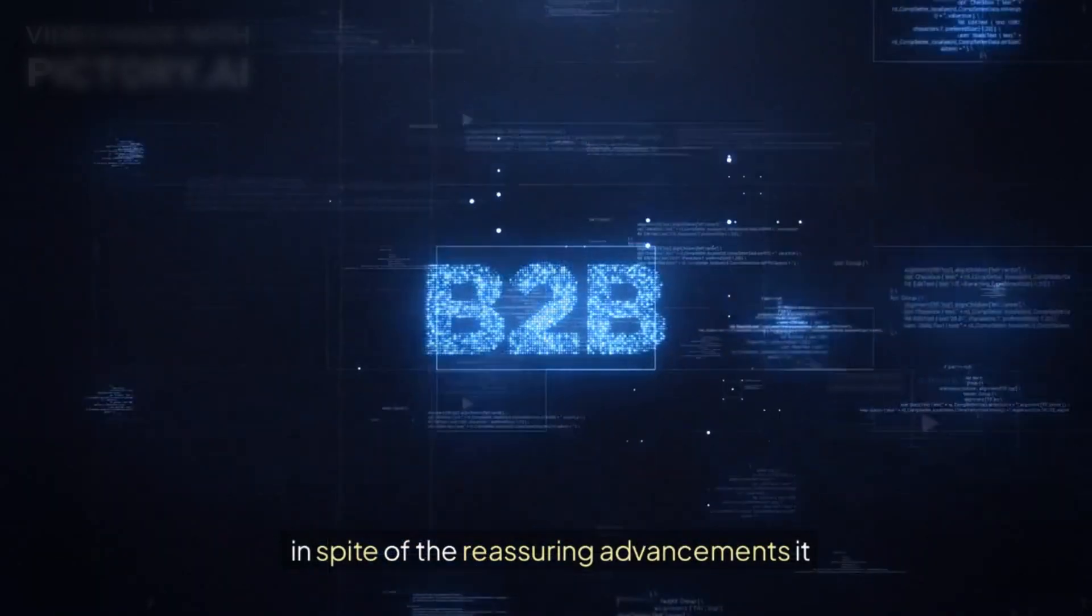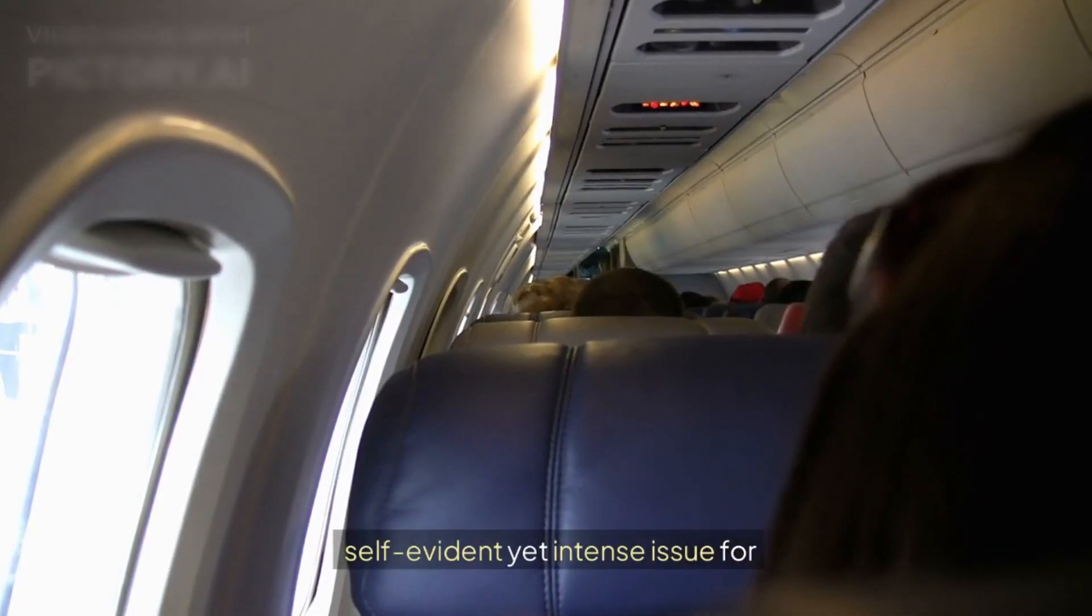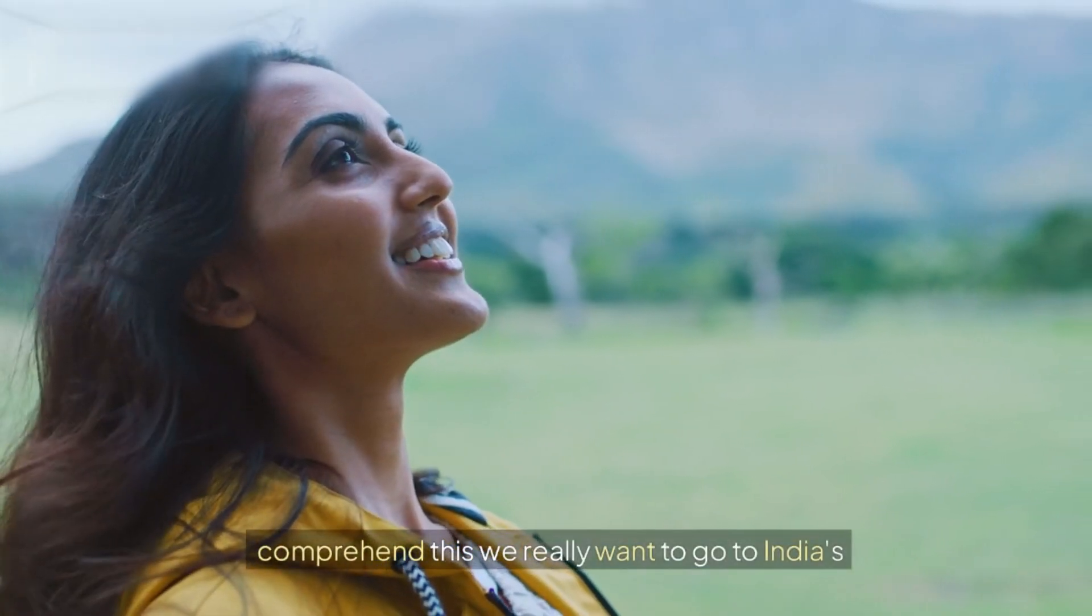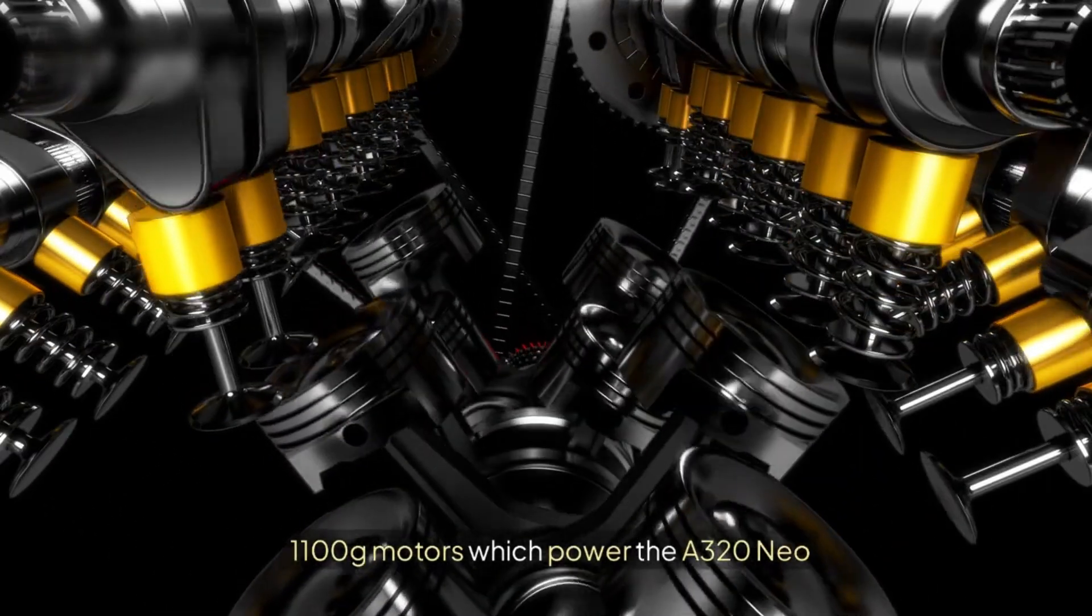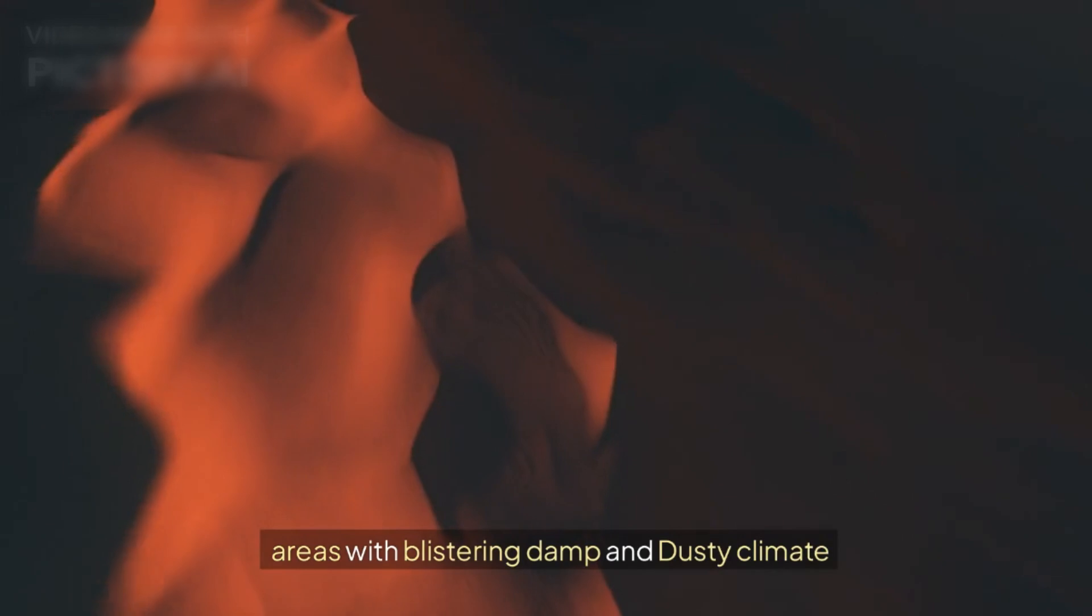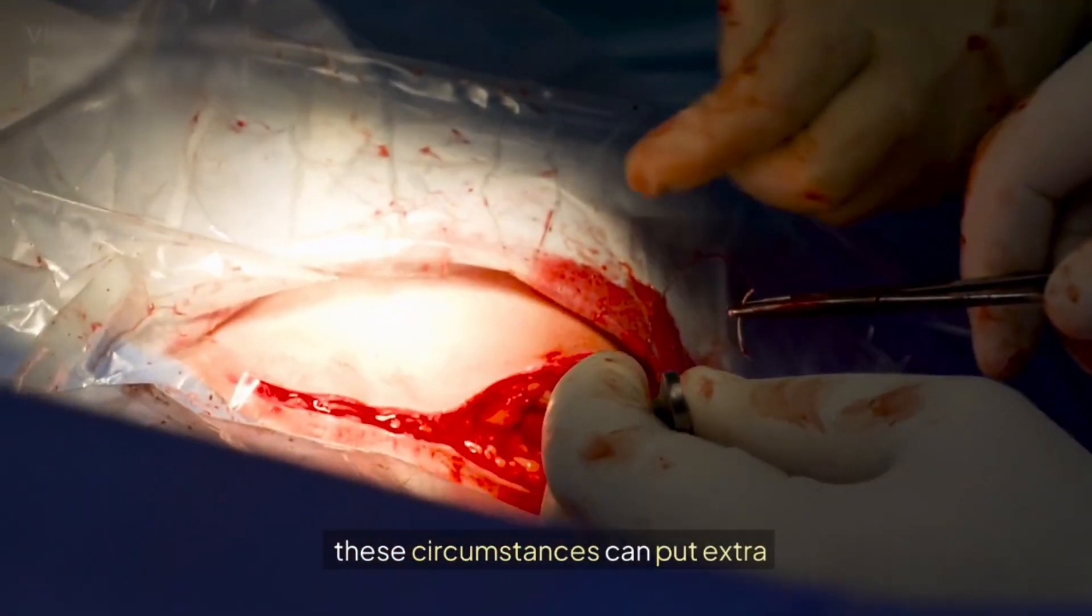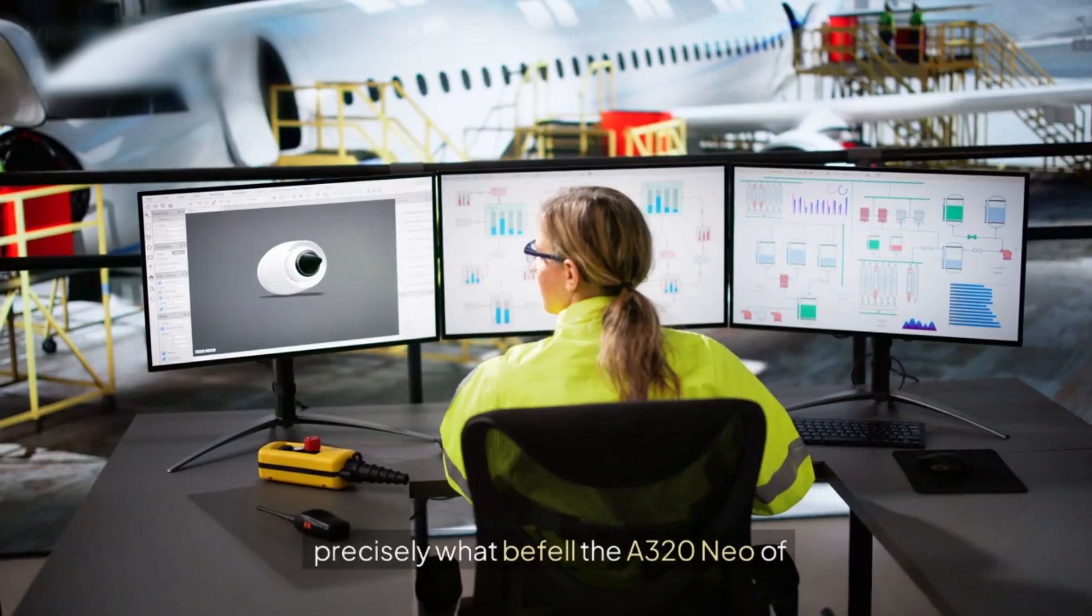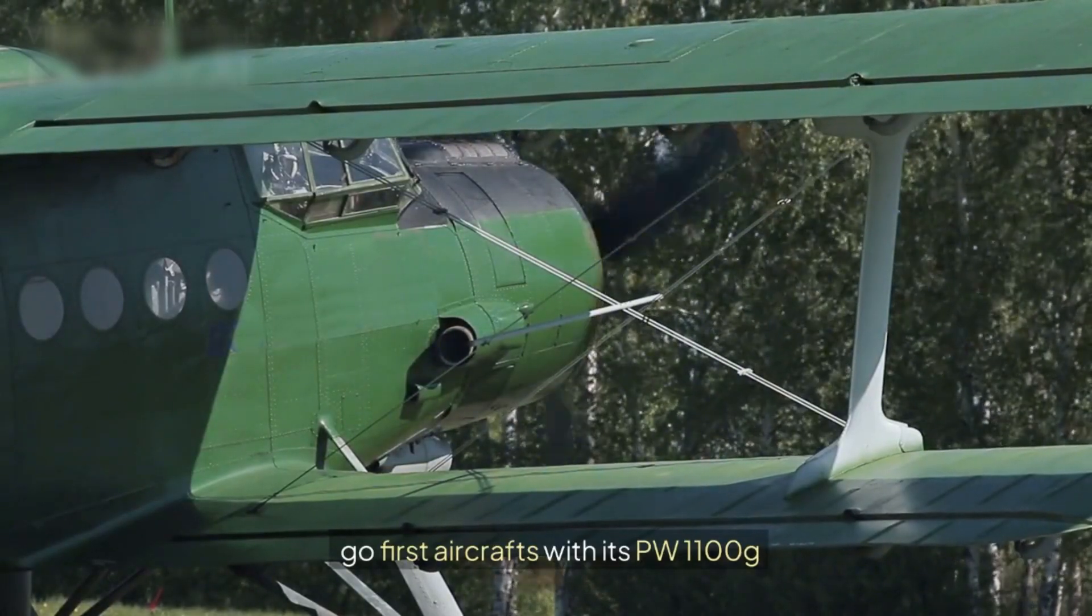Well, not exactly. In spite of the reassuring advancements, it creates the impression that the A220 is confronting a not really self-evident yet intense issue for their PW outfitted superfans. To comprehend this, we really want to go to India's GO-FIRST aircraft with their larger PW 1100-gram motors, which power the A320 Neo Airplane. You see, working airplanes in areas with blistering damp and dusty climate can introduce exceptional troubles for carriers. These circumstances can put extra weight on the motors, prompting potential execution issues. This is precisely what befell the A320 Neo of GO-FIRST aircrafts with its PW 1010-G motors.